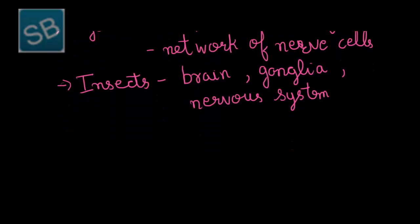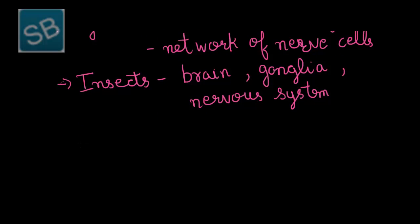However, in humans, the most complex nature of nervous system occurs, possessing central nervous system, peripheral nervous system.